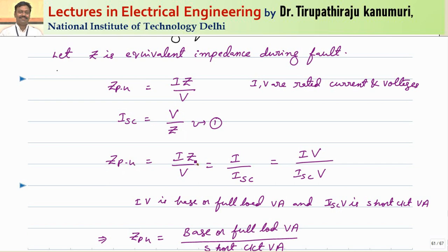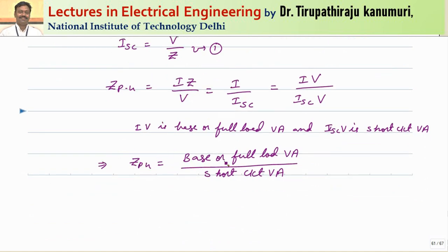Z per unit equals I·Z divided by V, and since V divided by Z equals ISC, Z per unit is therefore I divided by ISC. Multiplying numerator and denominator by V gives I·V divided by ISC·V. The rated current multiplied by rated voltage equals the rated volt-ampere, or full load volt-ampere of the system — generally represented in MVA.